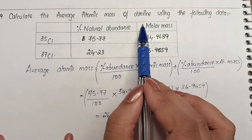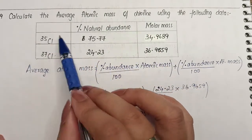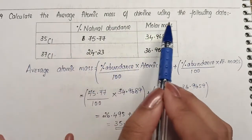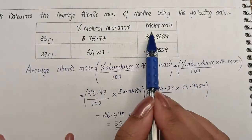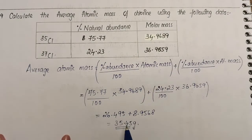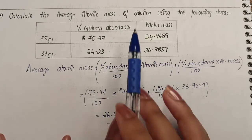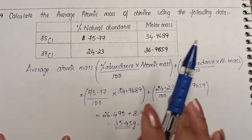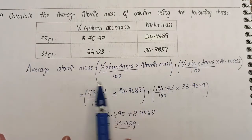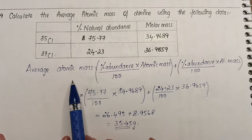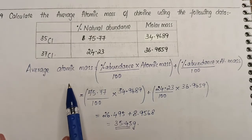When you want to find the average atomic mass for any other element with isotopes, natural abundance, and atomic masses given, use this same formula and your calculation will become easier. Follow this method for any average atomic mass calculation.